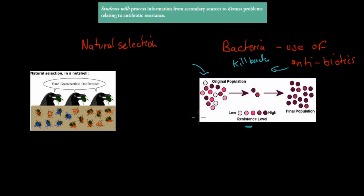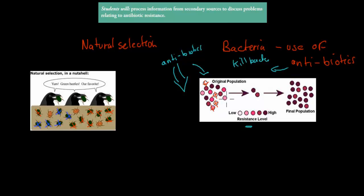So if we have natural selection and we use our antibiotics to kill off the bacteria, which ones will die first? You're going to find all the ones with very low resistance will die first, and then the ones which are less resistant than the purple ones. Eventually you're going to have mostly the resistant ones left over. These are the ones left over, and because they managed to get through the waves of antibiotics, they will reproduce.